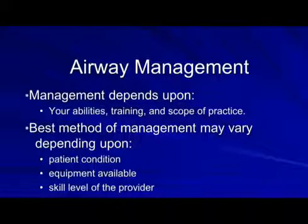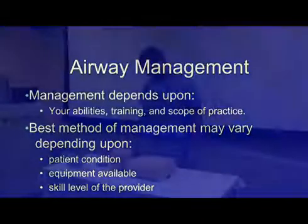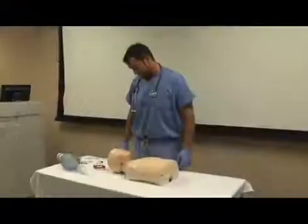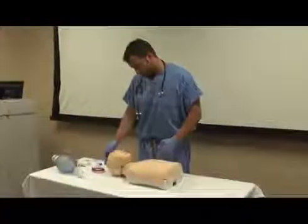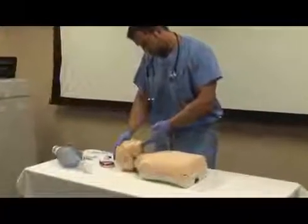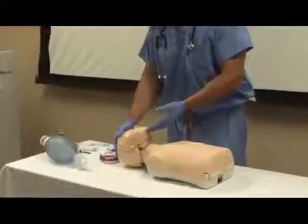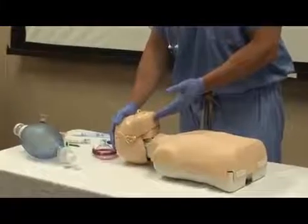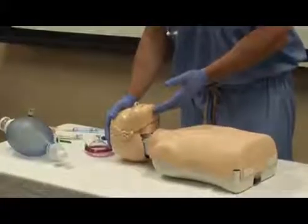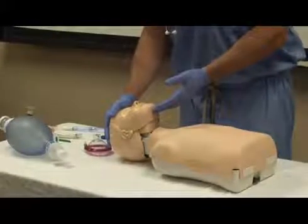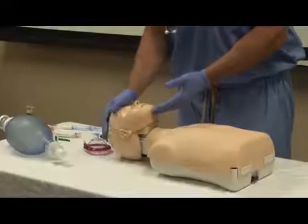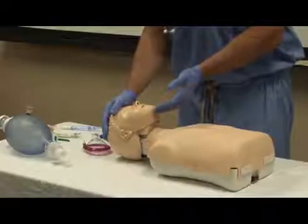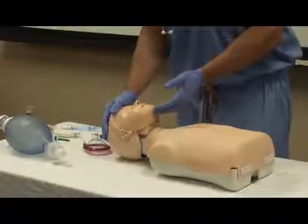The first two steps in any airway management response involve opening and clearing the airway. First, open the airway by using a head tilt chin lift by placing one hand on the forehead and the other on the chin. Push with the palm to move the head back while lifting the jaw to bring the chin forward.